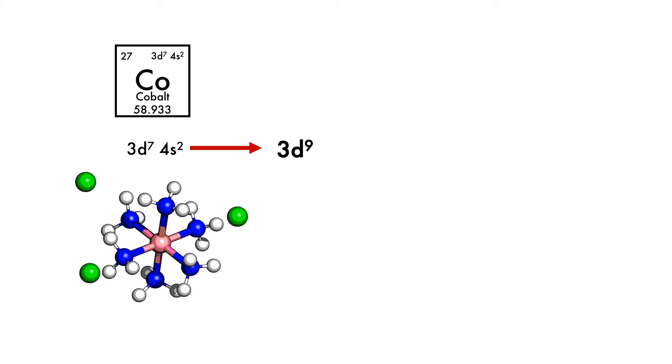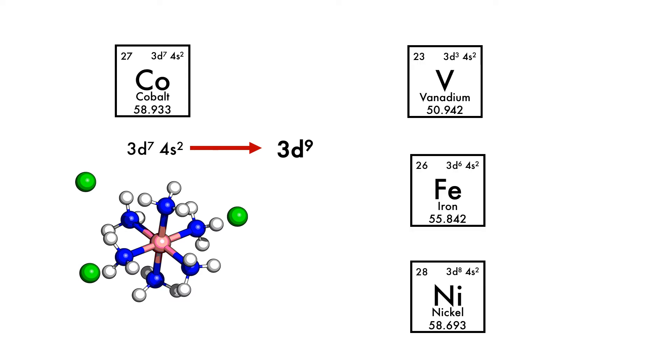A similar change happens in most transition metals. In vanadium, the electronic configuration changes from 3d3 4s2 to 3d5 in a complex, and the same thing happens across the d-block transition metals.